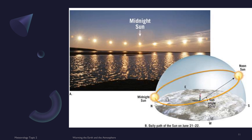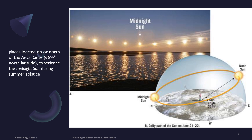The Antarctic Circle — the corresponding latitude in the southern hemisphere — experiences the opposite situation: total darkness on June 21st. Places located on or north of the Arctic Circle experience midnight sun during the northern hemisphere's summer solstice, while the southern hemisphere experiences total darkness during that same period, which corresponds to their winter solstice.